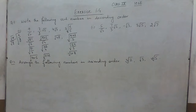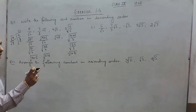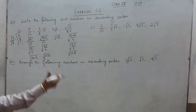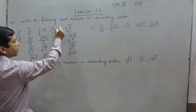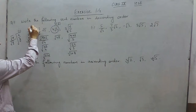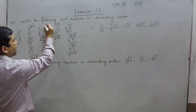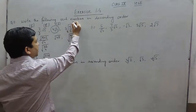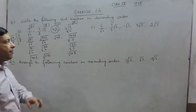Now that we have converted every number into irrational form written as under roots, we know that a smaller number under a root will be smaller and a greater number under a root will be greater. Here the largest number is √48, followed by √40.5, then √11.25, and the smallest is √10.8.